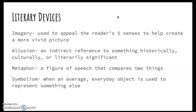Some literary devices that we're going to be talking about include imagery, which is another name for sensory details. Just to give you a quick recap, imagery or sensory details are used to appeal to the reader's five senses to help create a more vivid picture. Think of when an author talks about the feeling of the sun on their skin or the smell of whatever food the character is cooking — those types of details appeal to our five senses and help us get a more clear picture in our brain of exactly what the author is trying to describe.